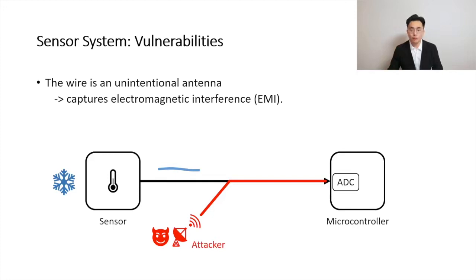For example, if the attacker manipulates the temperature sensor output of a cooling system of a nuclear reactor, the cooling system may not properly adjust the temperature of the nuclear reactor. This is a very dangerous case. Nowadays, we have different ways of attenuating attacking signals, such as shielding and filtering, but they cannot eliminate the attacking signal.